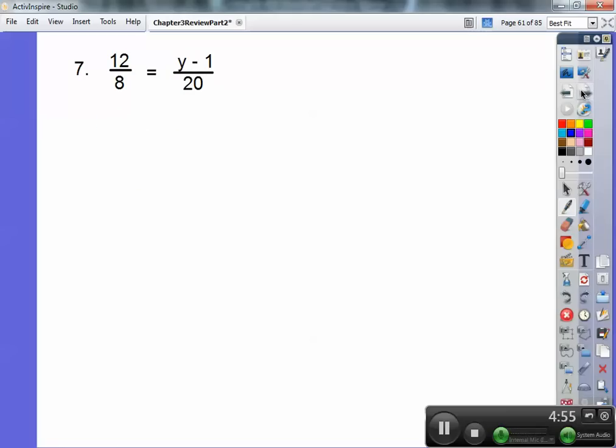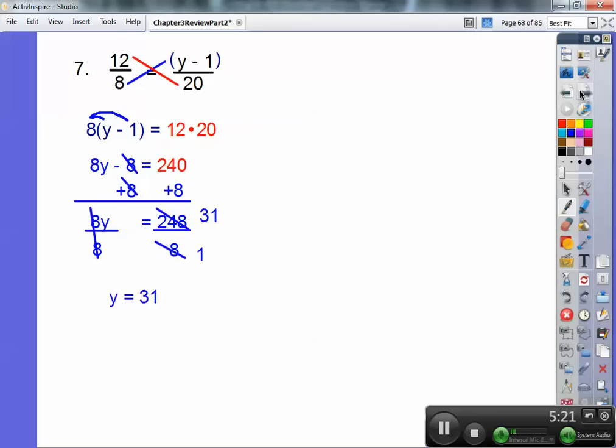Let's try another one of those. This time we got the y minus 1 on top, which is a binomial, two terms. So when I do that, I've got to wrap it in parentheses when I cross-multiply. So I get 8 times the quantity y minus 1 equals 12 times 20. I'm going to distribute the 8 through on the left. 12 times 20 is 240, add 8 to both sides, and then you get 8y equals 248. So when you divide, you get 31.